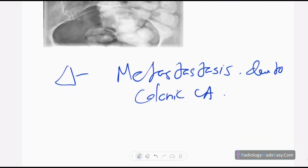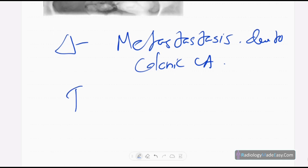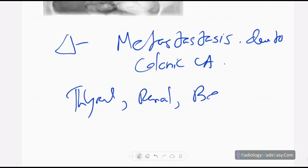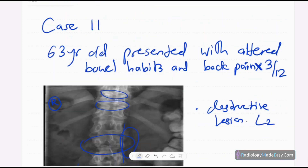Metastasis due to colonic carcinoma is a common cause of lytic bone lesions. Other common malignancies that can cause lytic lesions in bones include thyroid, renal, breast, and lung cancer — apart from colonic carcinoma. That concludes case number 11 in abdominal radiology. Please subscribe to our YouTube channel to get notifications of new videos, and feel free to comment. Thank you everyone.